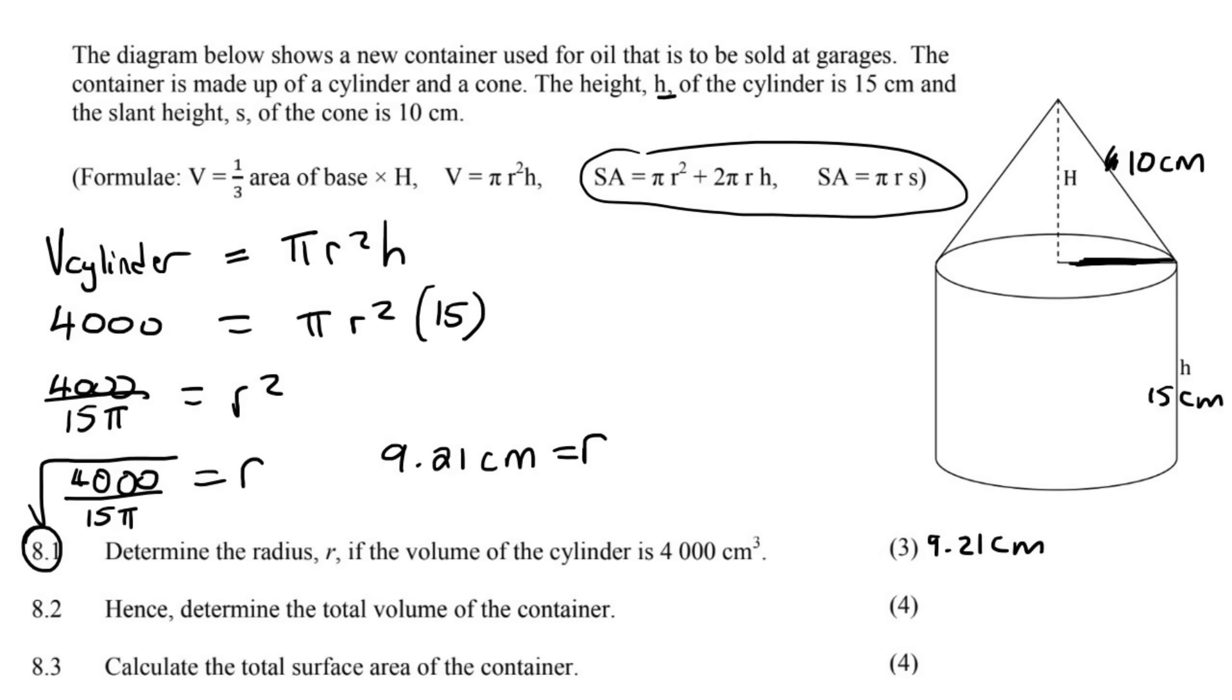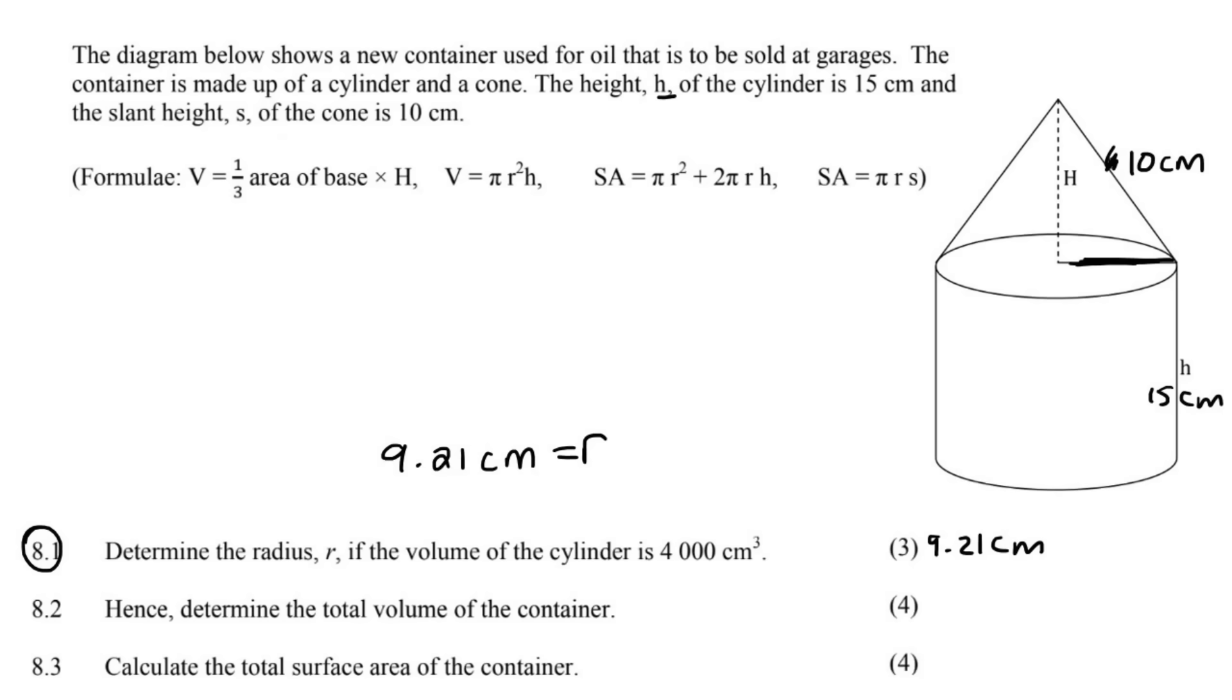8.2. Hence determine the total volume of the container. Now, when we're looking at volume, I want you to smile because volume is easy. Volume will never try to catch you out. Surface area, by the way. Oh, that's a different one. That's the one that will try to catch you. Volume area, easy money. So, they said they want the total volume of the container. So, that will just be the total volume is equal to the volume of the cylinder plus the volume of the cone.